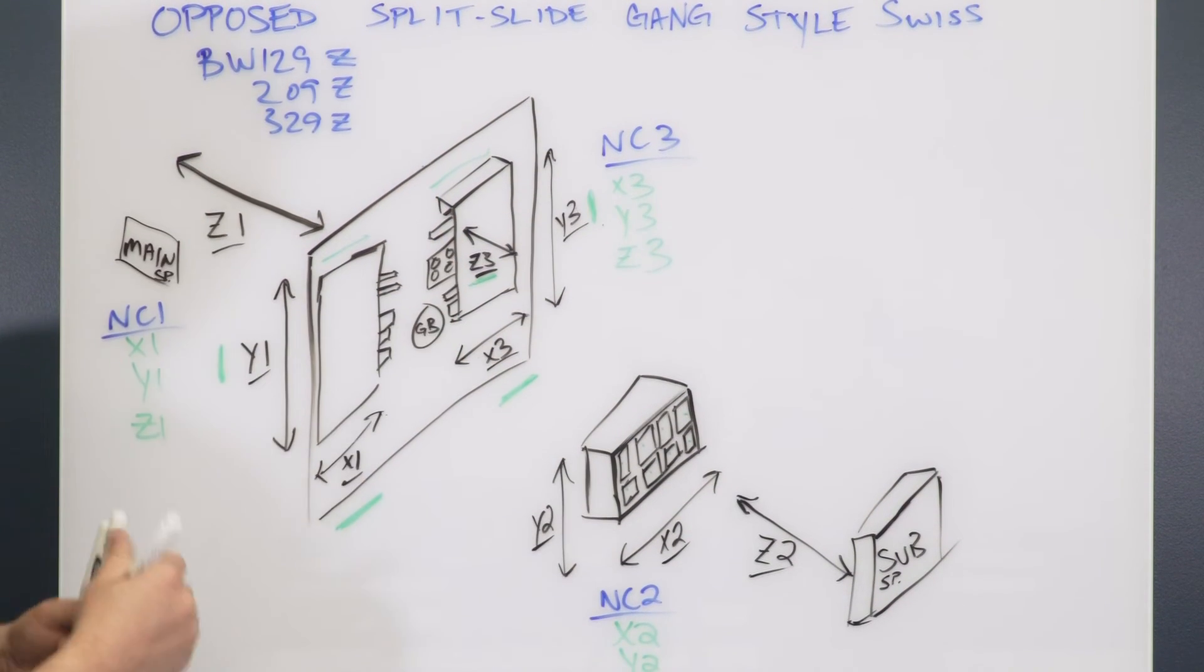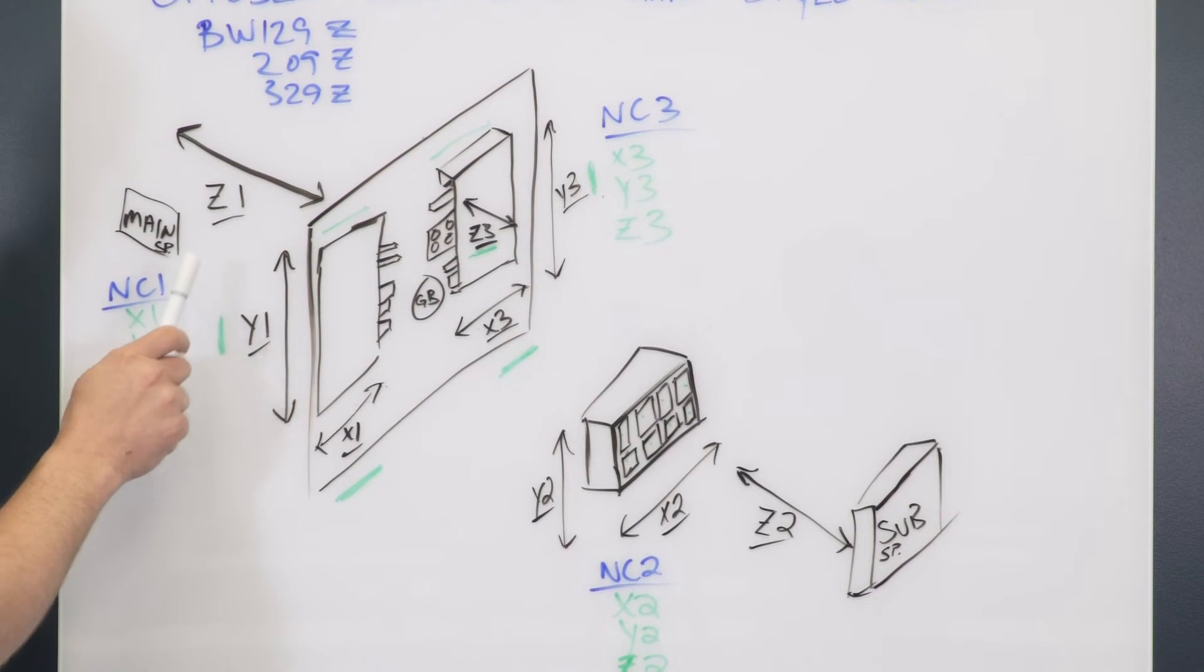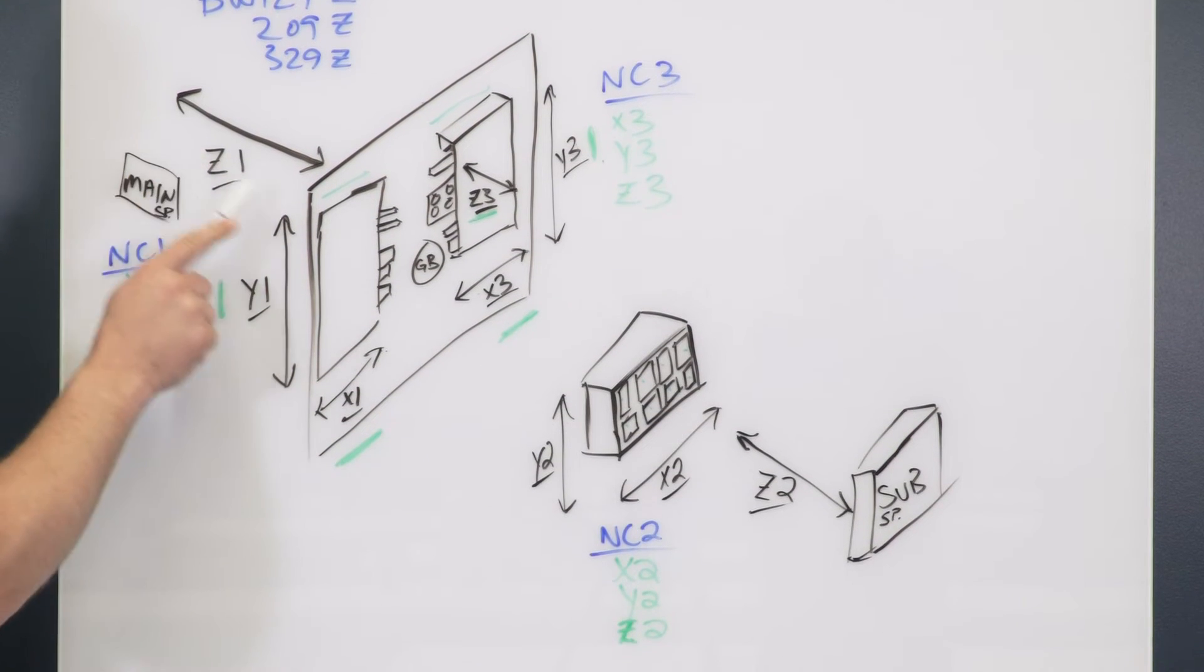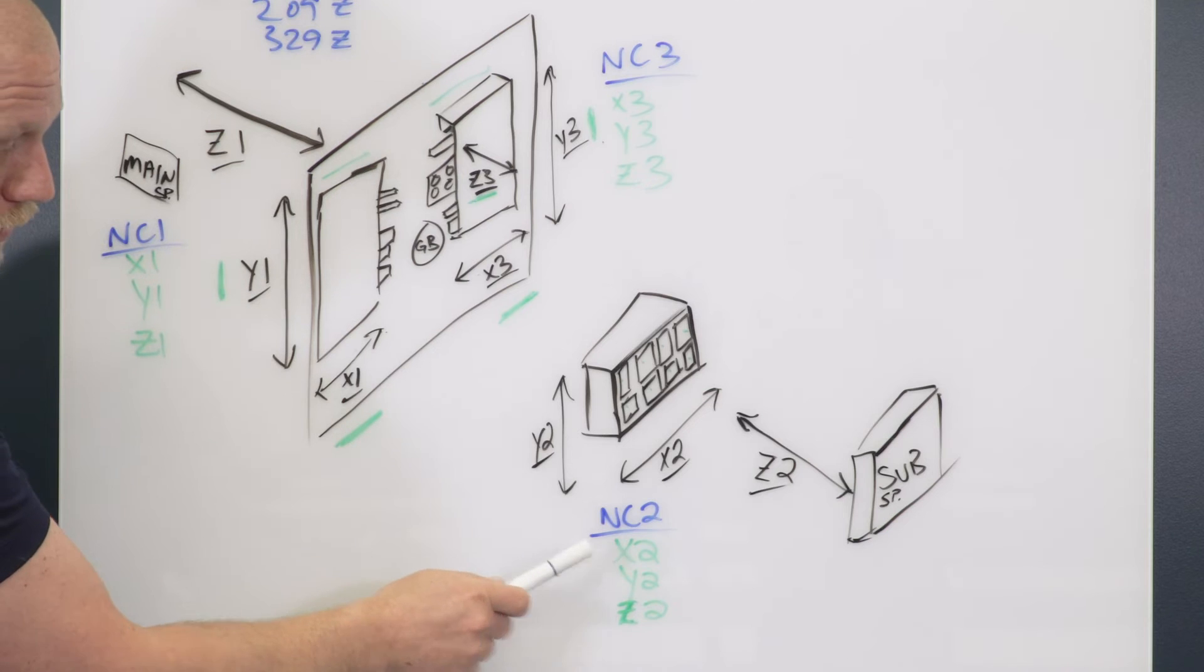On a three-path machine we have NC1, which would be X1 front gang slide, Y1 front gang slide, and Z1 is your main spindle. On path two, NC2, we're going to have X2, Y2, Z2.